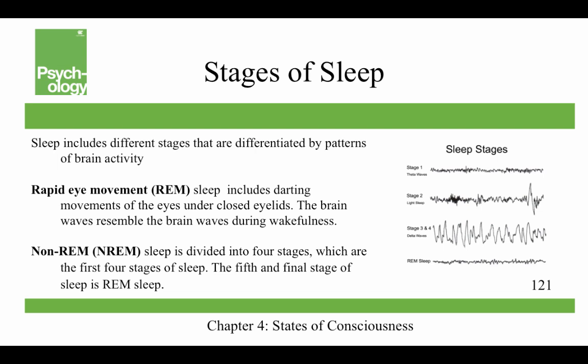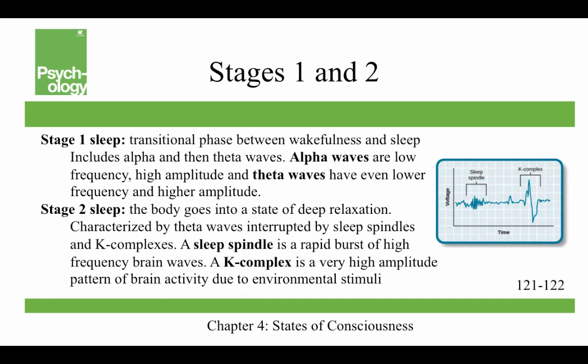Sleep includes different stages differentiated by patterns of brain activity. The two general stages are REM and non-REM sleep. Rapid eye movement, or REM sleep, includes darting movements of the eyes under closed eyelids, and its brain waves resemble those of someone who is awake. Non-REM sleep is divided into four stages, which are the first four stages of sleep, and the fifth and final stage is REM sleep. Stage one sleep is a transitional phase between wakefulness and sleep, characterized by alpha and then theta waves. Alpha waves are low frequency and high amplitude; theta waves have even lower frequency and higher amplitude. Brain activity during stage one resembles someone who is very relaxed but awake, and it's easy to wake someone from stage one — they may not even think they were asleep.